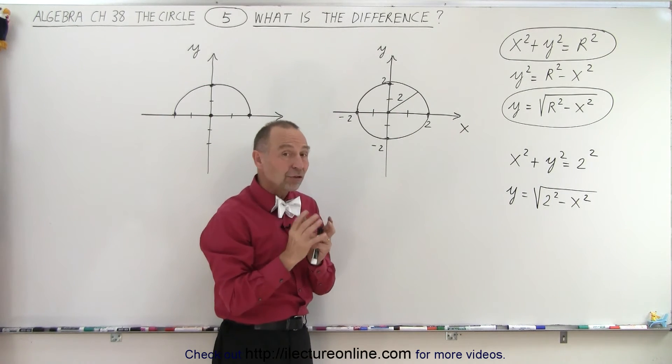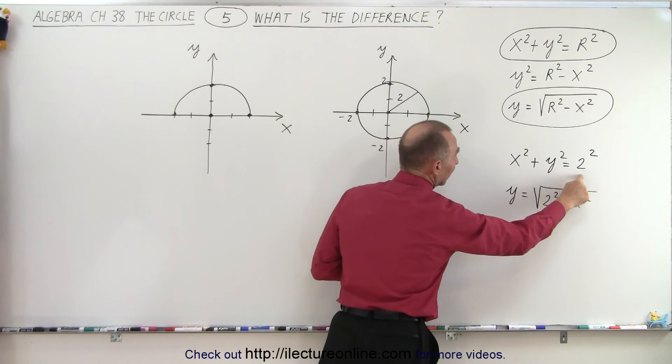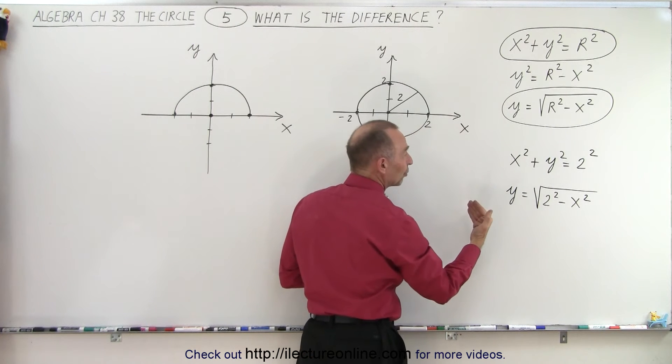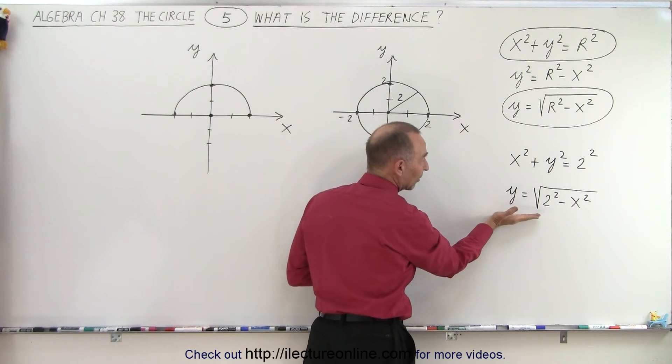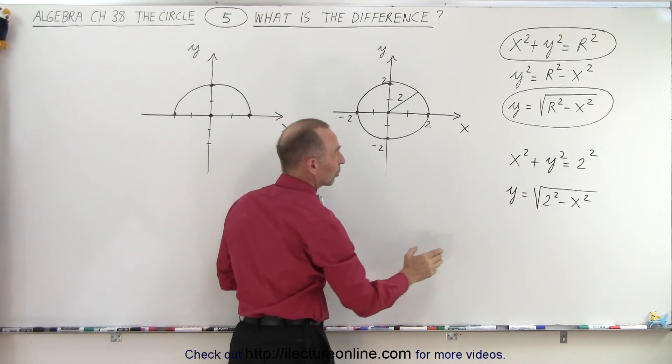So if you want to write the equation of a circle in terms of a relation, then it's perfectly fine to write it like this. But if you want to draw it in terms of a function, we can only take the positive side of it. That means we can only have this part of the circle, not the bottom part.